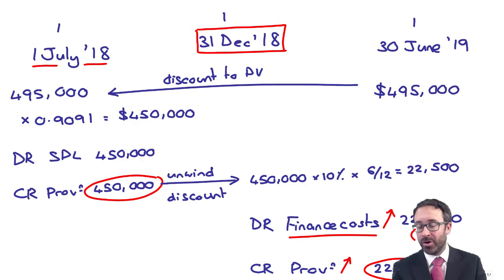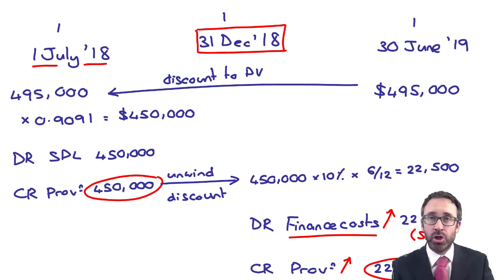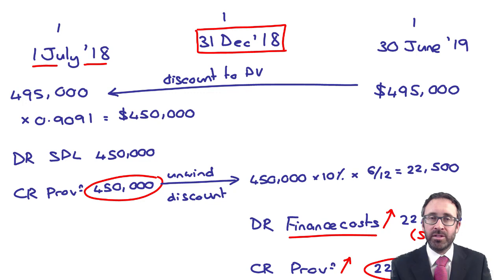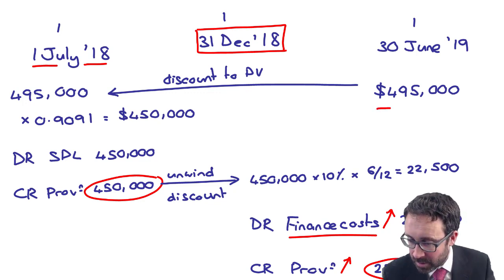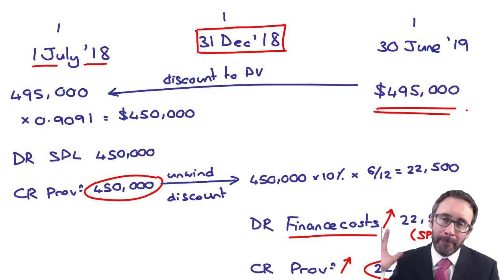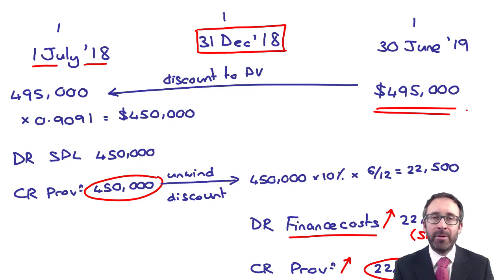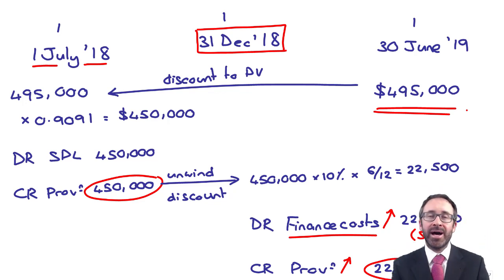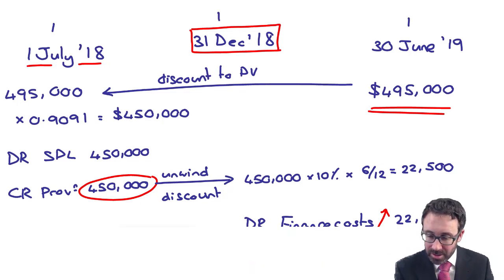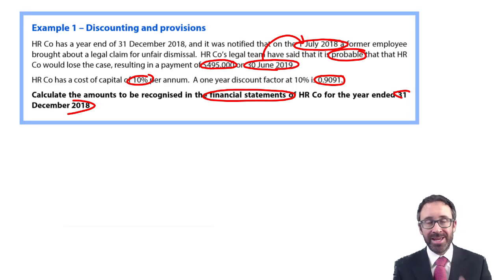In the period from December 2018 to June 2019, you would charge another $22,500 to finance costs and increase the provision by the same amount, arriving at a provision of $495,000 at June 2019. When the payment is made, you credit the bank and debit the provision with $495,000. That wasn't asked for within the question, but that's as complicated as it would get within a question of this nature.